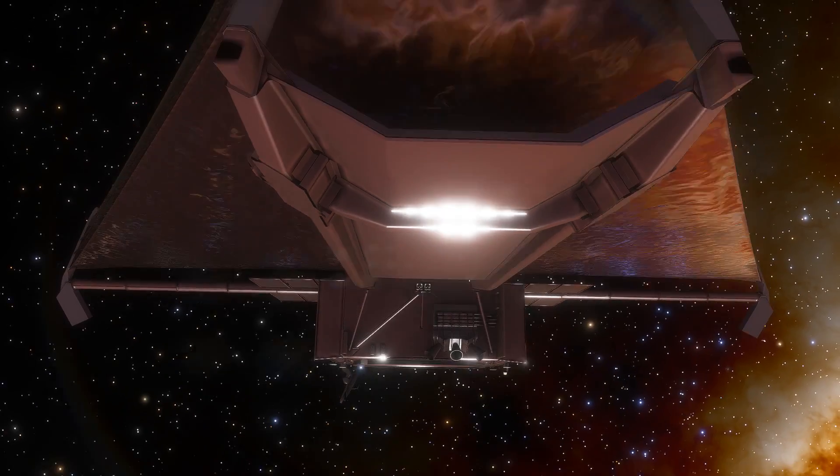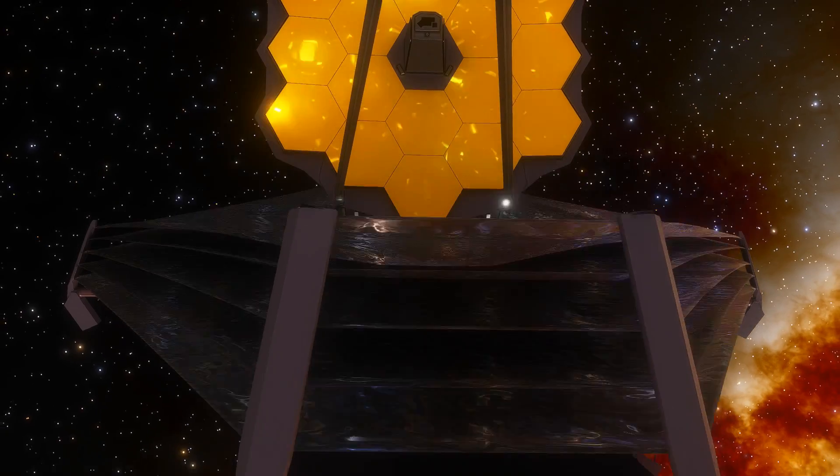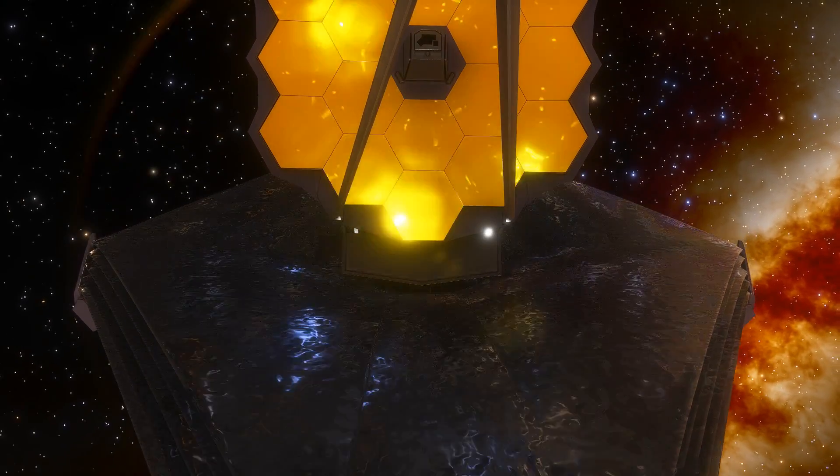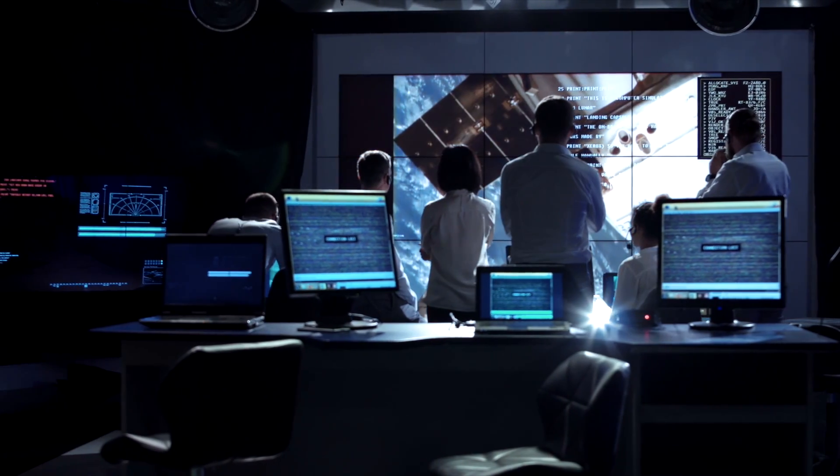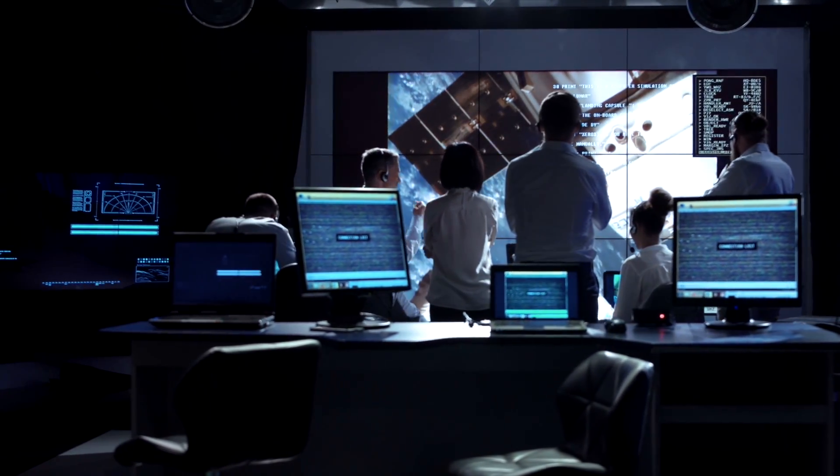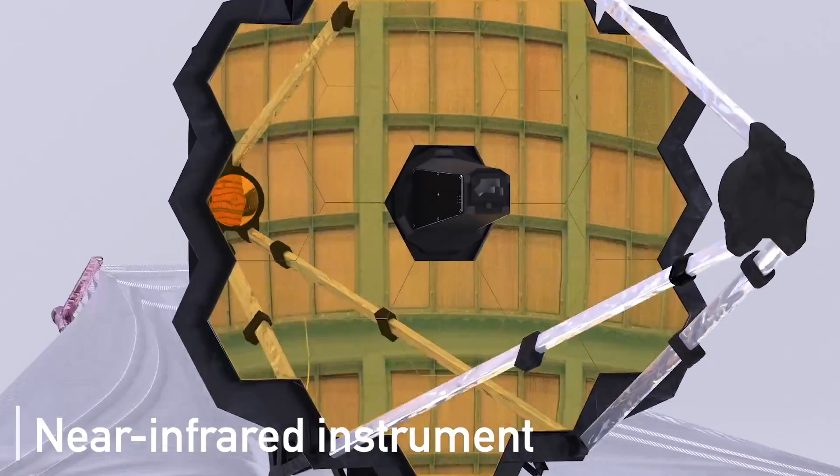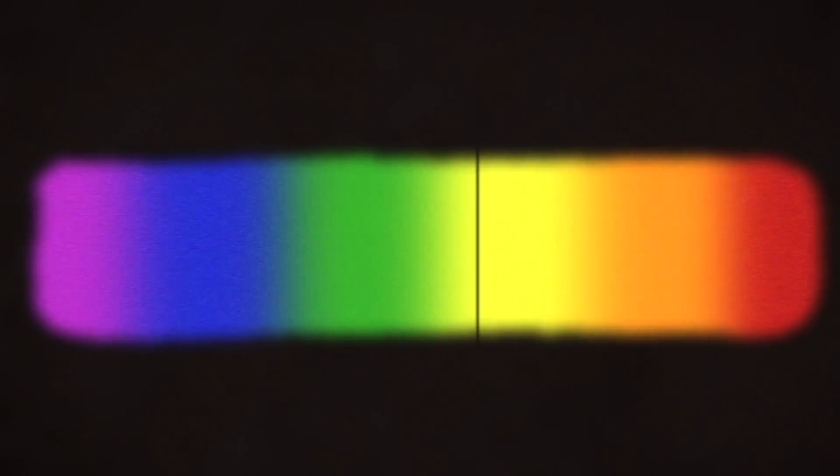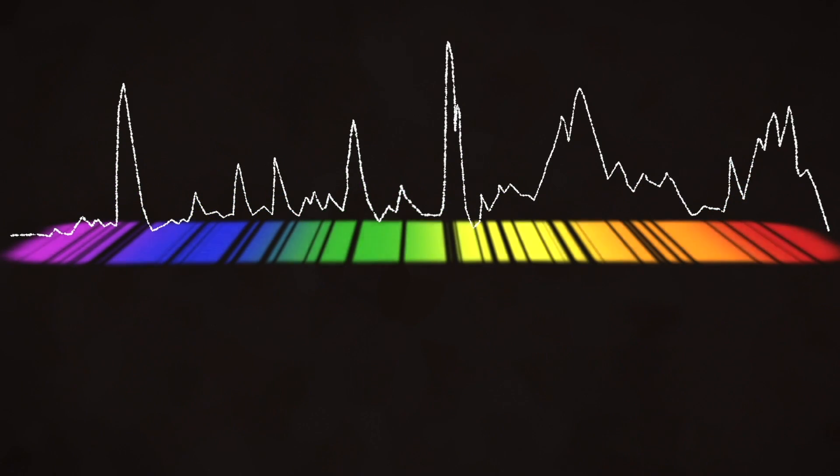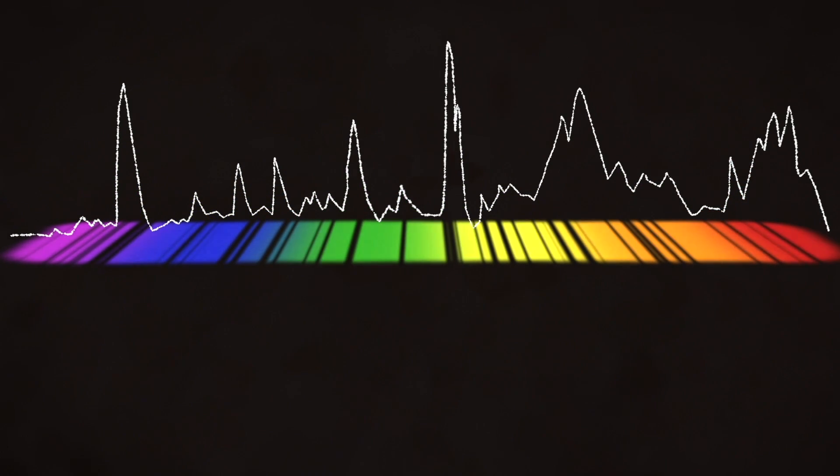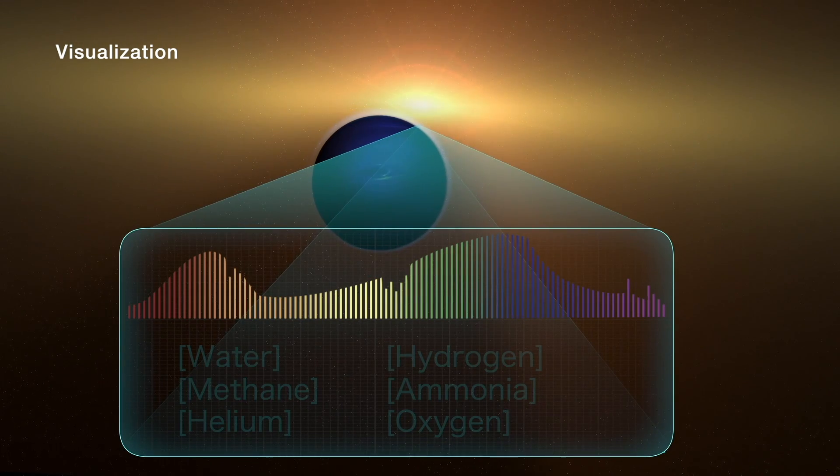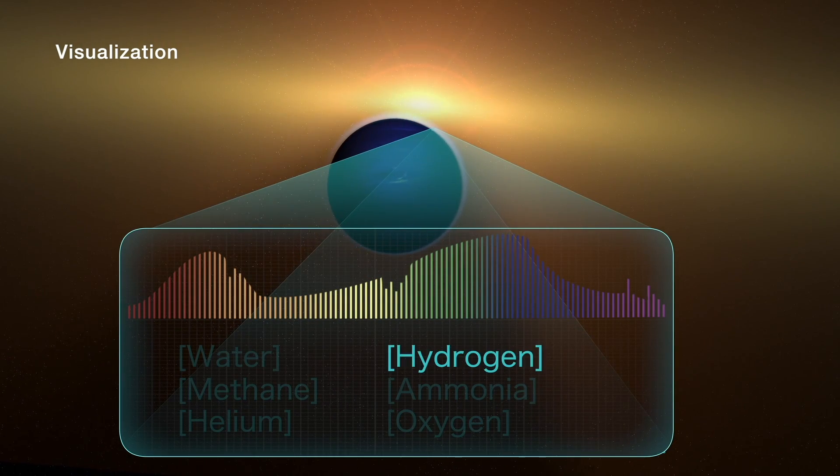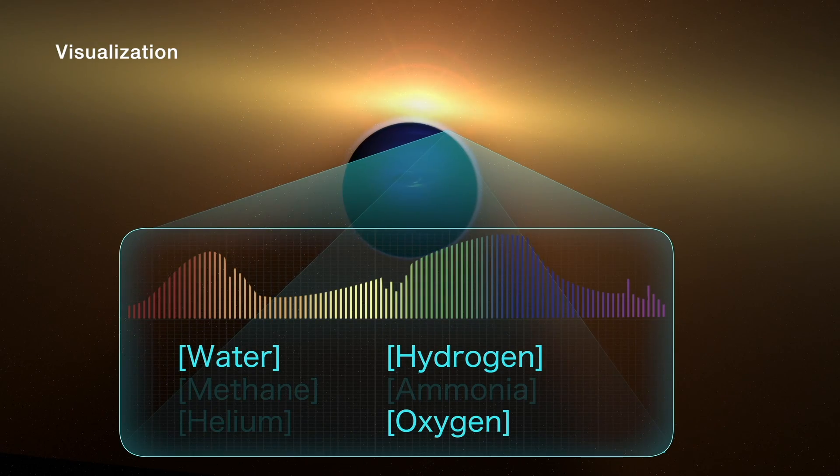The JWST might be set up to look for Proxima B's LED light according to scientists. They anticipate that they will be able to identify this artificial light if it exists by utilizing the near-infrared instrument on the James Webb Telescope and looking for the telltale signals of LED light waves in the light from the planet and its host star. By calculating the light curves from the planet and its host star, the scientists explored the possibility of finding artificial light on Proxima B's dark side.